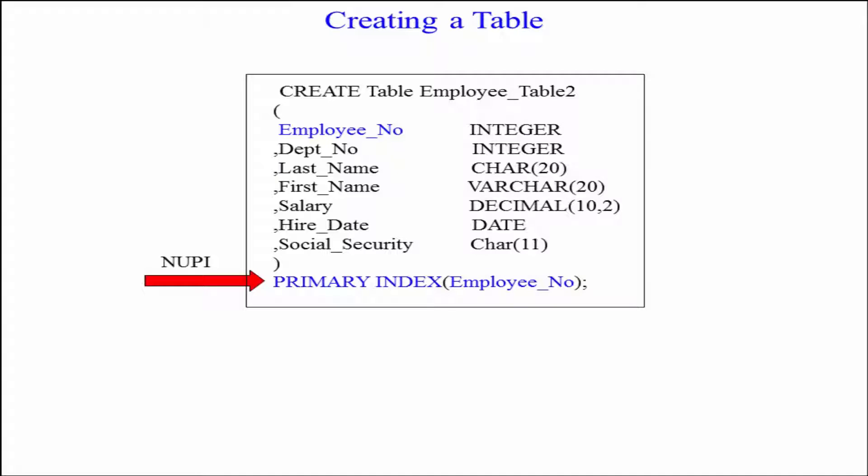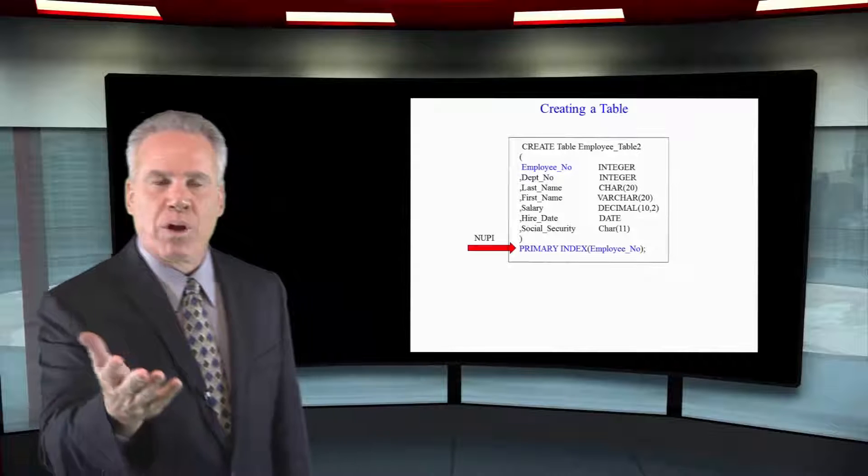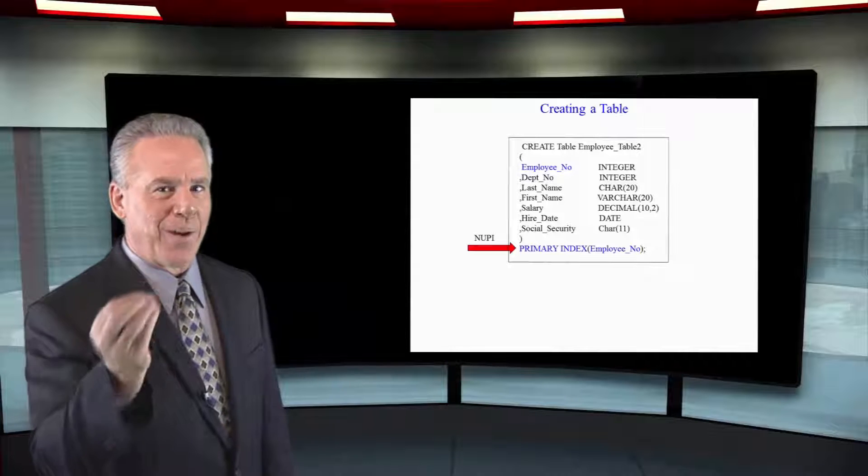But the word non-unique is never used. Here again we create our table, open paren, list all our columns, close paren, and then we say primary index employee number. If we had two employee number 99's in this table, no problem because it's a non-unique primary index.